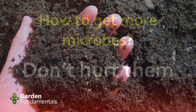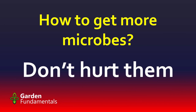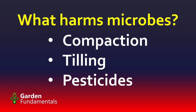Rule number one is don't hurt them — take care of the ones you have. Microbes are harmed in three ways: compaction, tilling, and pesticides. Compaction is where we squeeze the soil down — what happens when you walk on soil. Compaction reduces the amount of air and microbes want just as much air as plants. Less air means less microbes, less plant growth. Compaction is always bad. So: don't walk in your garden. Stay off your lawn at this time of year. If you do have a garden, make pathways and always walk on them — stay out of the planting areas.